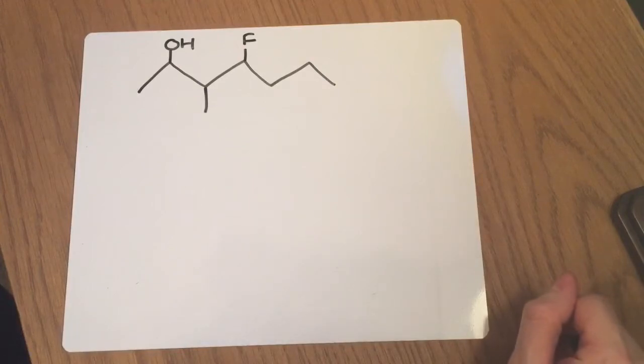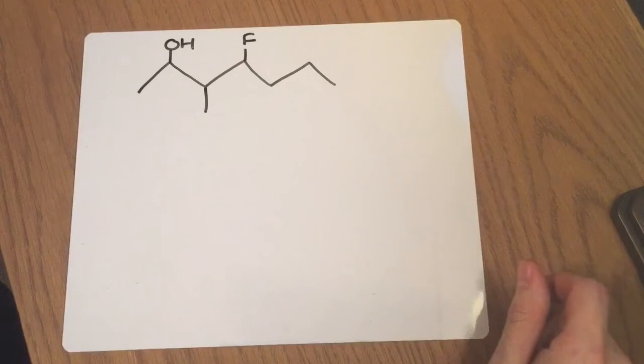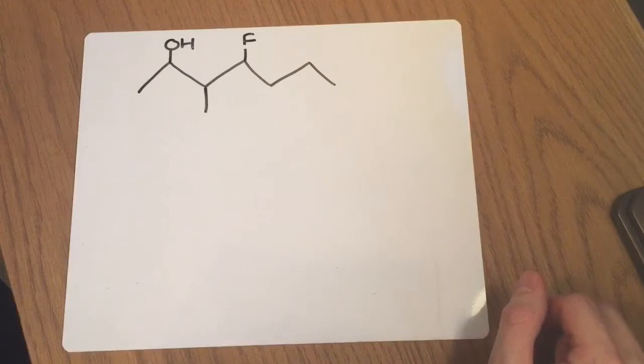What I'm going to do first is I'm going to number out the longest continuous carbon chain for this particular molecule. Now I'm going to number this one from left to right and I'll explain the origin of why I've done that after I've numbered it, but it will make sense. For now you've just got to trust me.